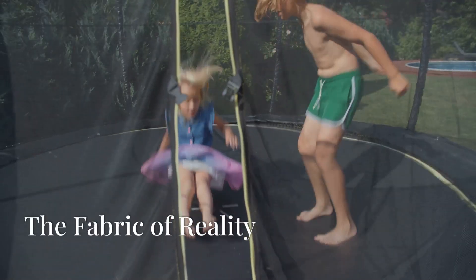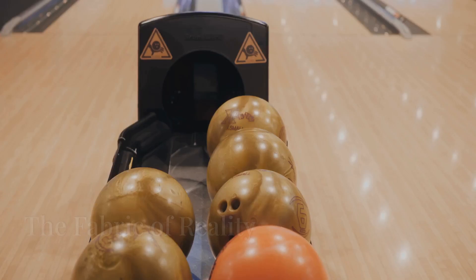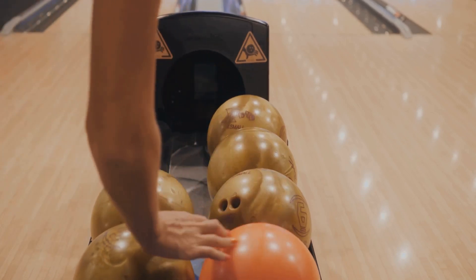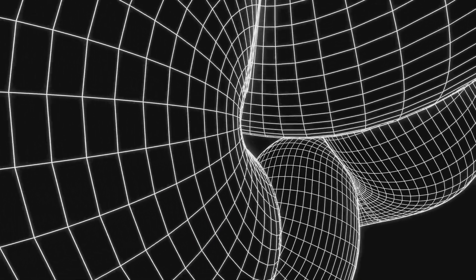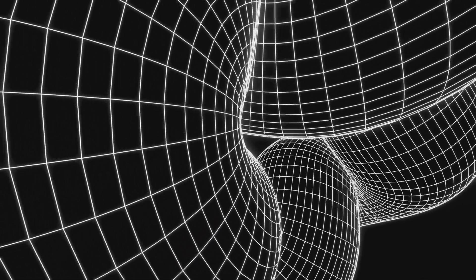Imagine a trampoline, the kind you bounced on as a kid. Now, picture placing a bowling ball in the center. What happens? The trampoline sags, creating a dip around the heavy ball. This is a simple way to visualize how gravity warps space-time.